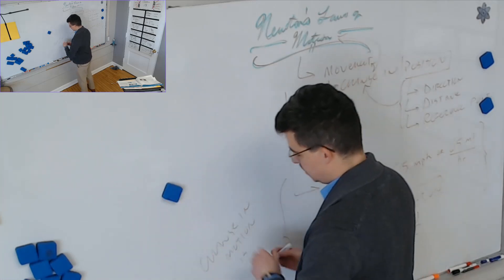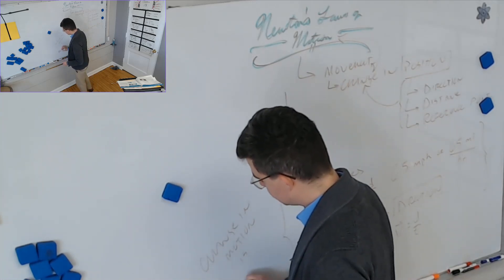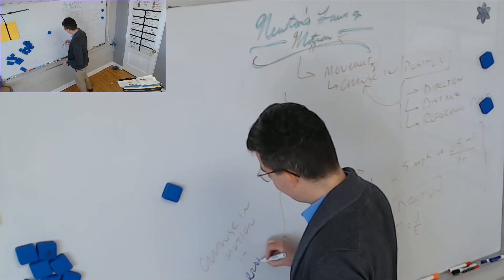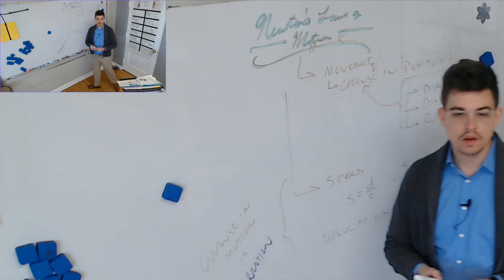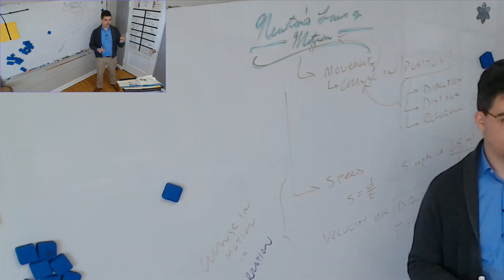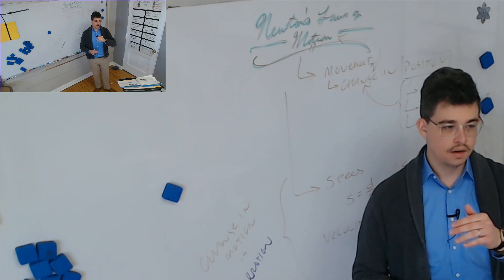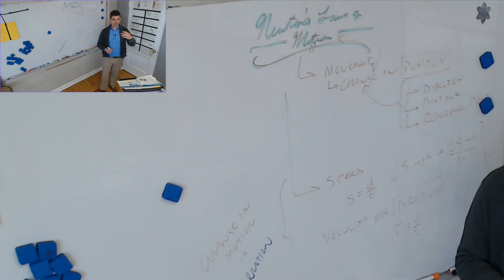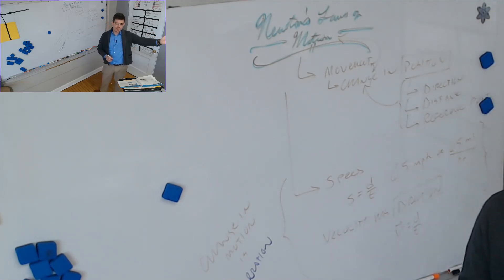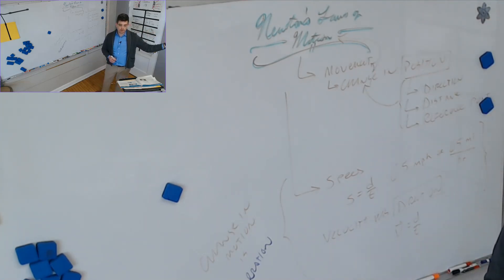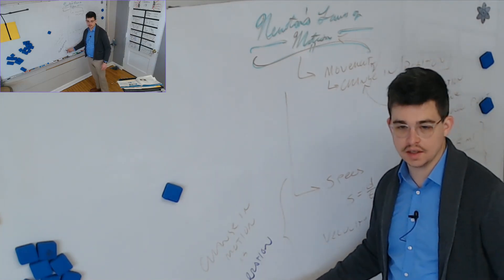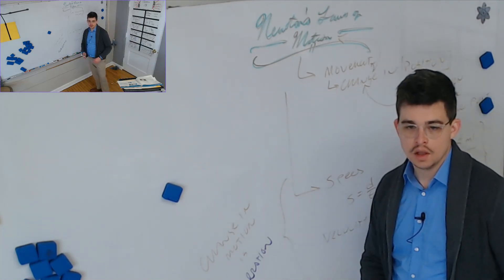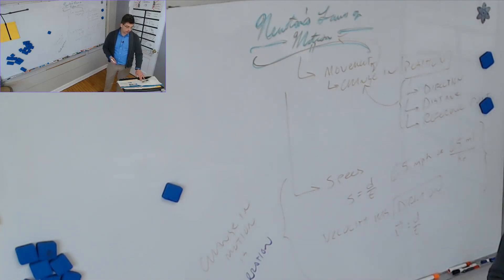Change in motion is acceleration. What are the three ways an object can accelerate? Increase in speed, decrease in speed, or — the one people forget most — change in direction. The ways an object is NOT accelerating are staying still and moving at constant speed in a straight line.